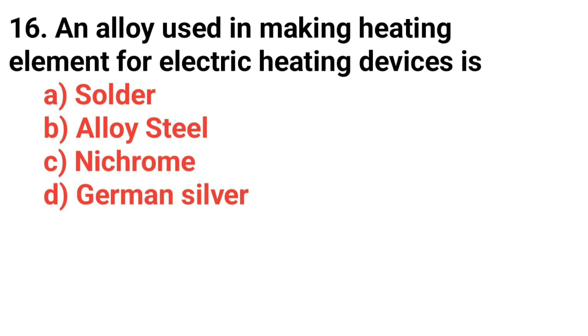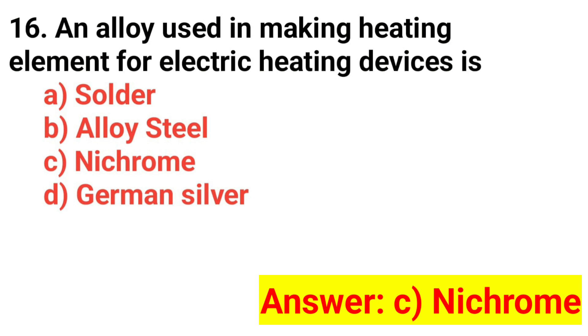Question number sixteen: An alloy used in making heating elements for electric heating devices is? The answer is option C: nichrome.